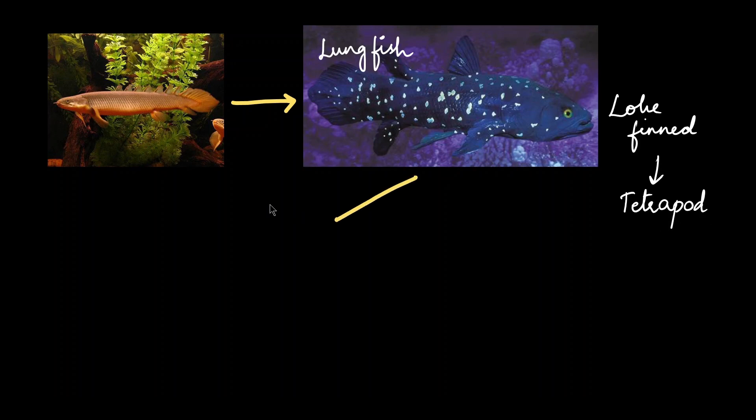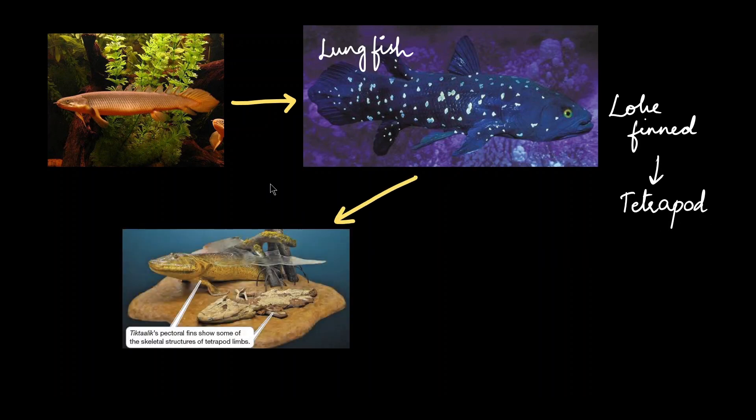And that finally led to what we call tetrapods or the four-legged creatures. So how do we know this happened? That's because scientists found a fossil belonging to an animal named Tiktaalik. Tiktaalik is an intermediate between the fins and the tetrapods.